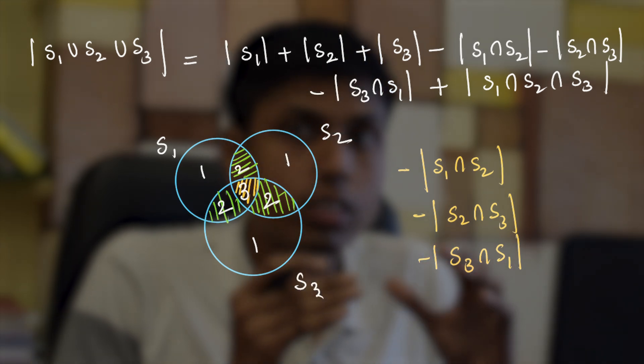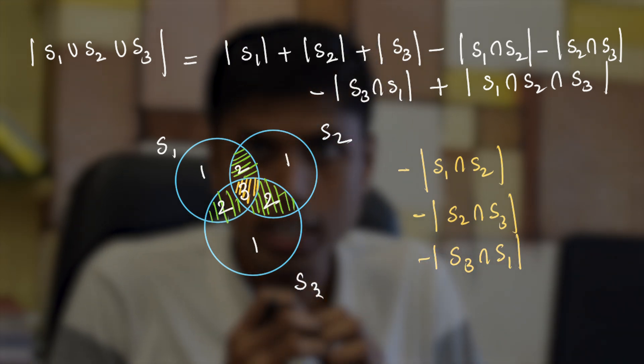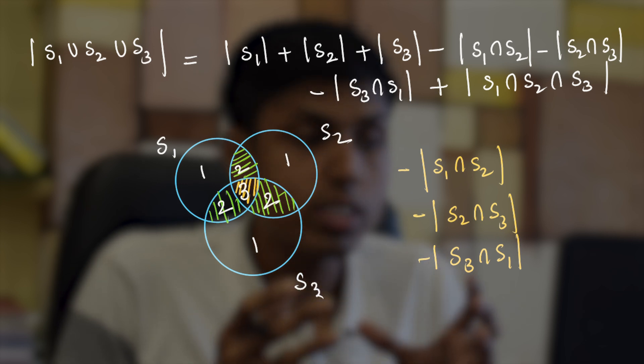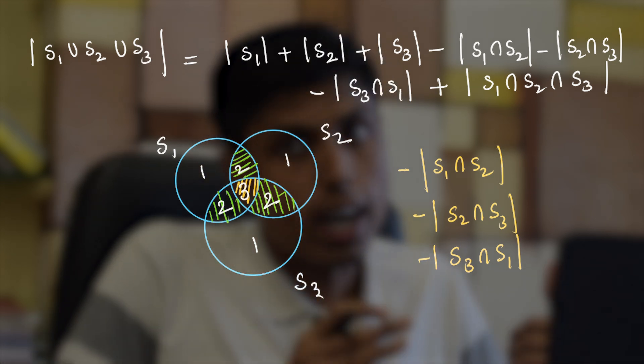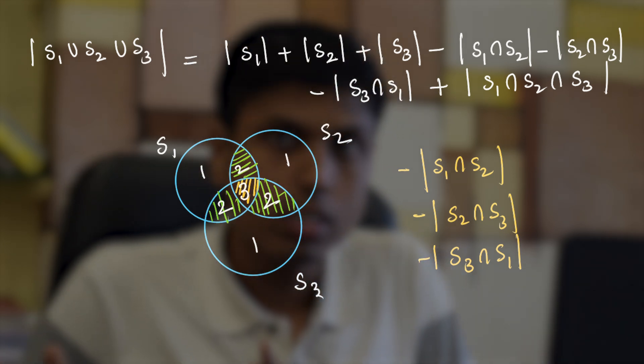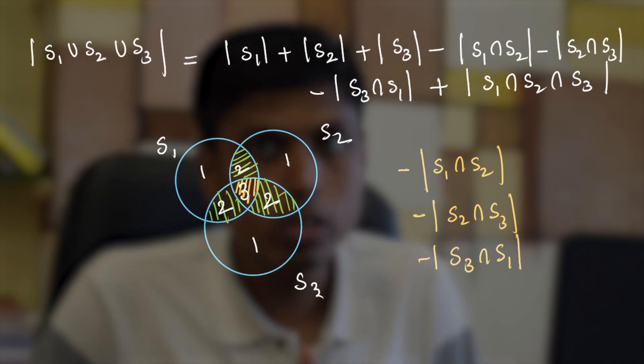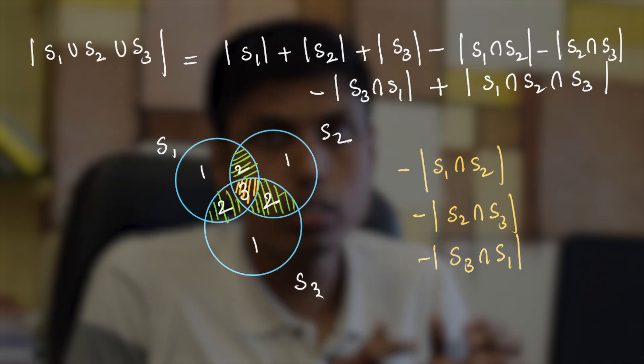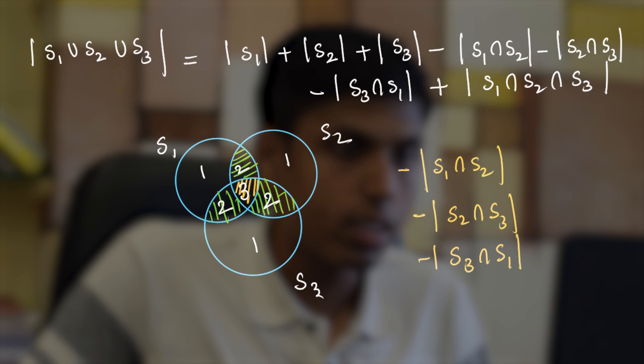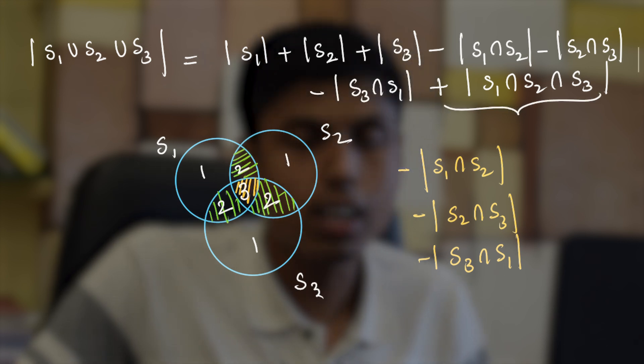And when you subtracted the cardinalities taken two at a time, you actually subtracted it thrice. So you added thrice and subtracted thrice, which means you have to add it once more to get the actual count of this triple intersection. That's why we added it at the last.